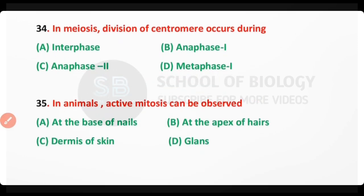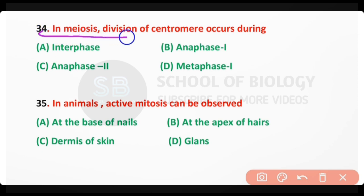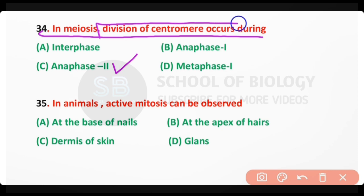Question number 34. In meiosis, the division of centromere occurs during: interphase; anaphase I; anaphase II; metaphase I. The correct answer is option C. In meiosis, the division of centromere occurs during anaphase II.